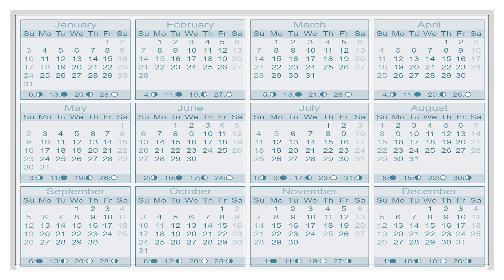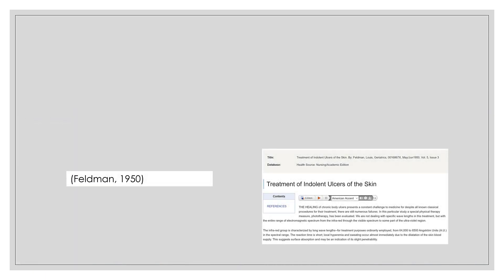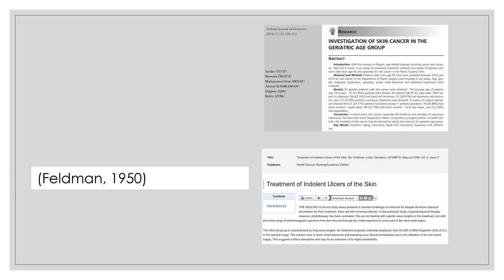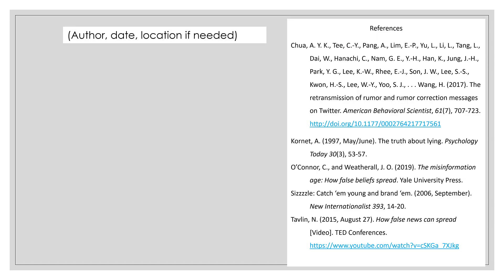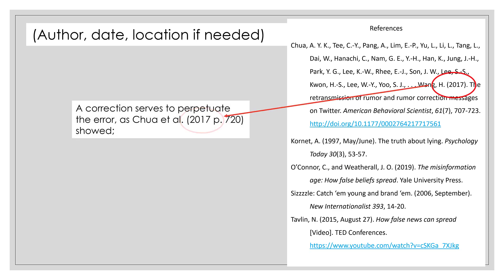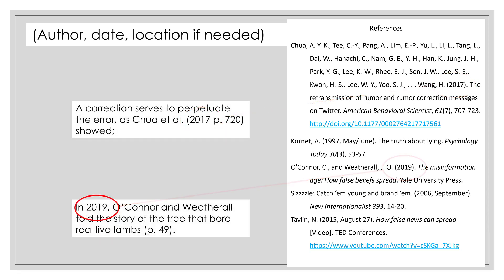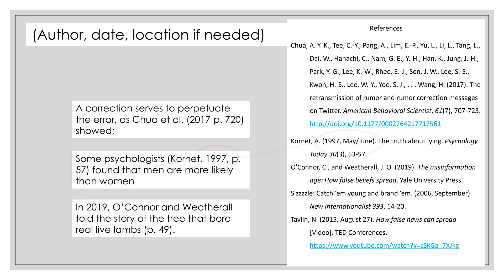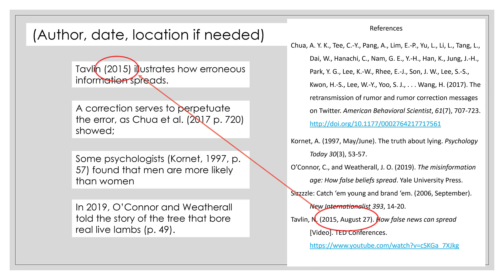Now we're on to the second part of your in-text citation — the date! In APA, the date is always second. APA is usually used in the sciences and social sciences, and in those fields it's important to know the date. If you found conflicting information about skin cancer, one written in 1950 and one in 2014, which one would you find more convincing? For your in-text citations, the date is just the year. In your references, your date could be the year, or it could include the month or even the day, but don't worry about that in the in-text citations. There are a very few exceptions to this rule.